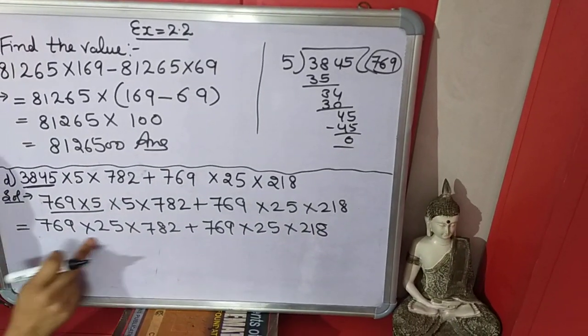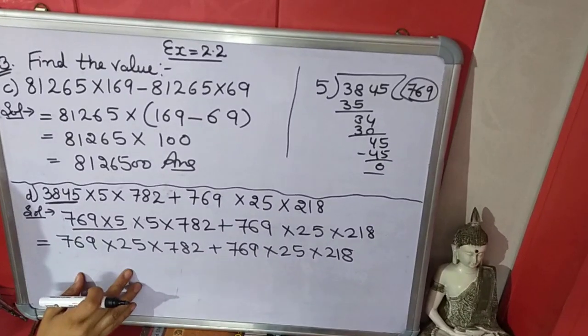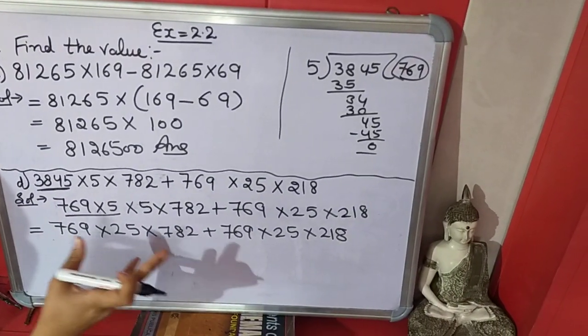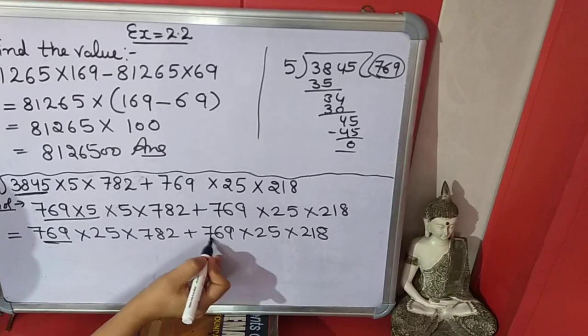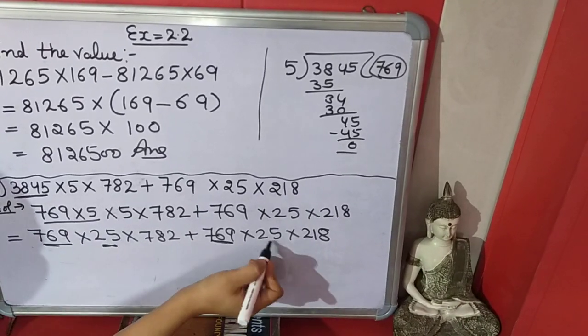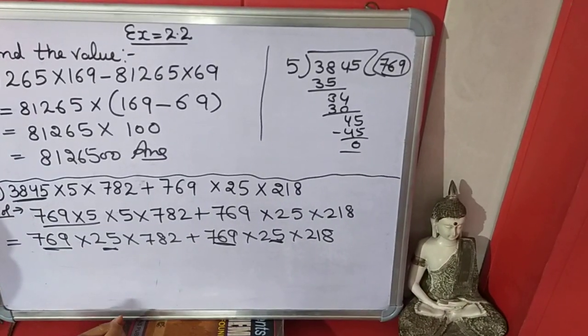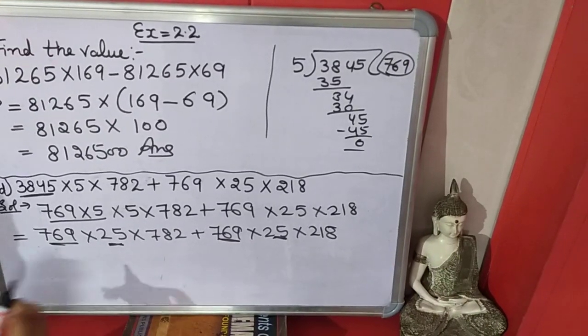Now in this line there are two numbers which are coming outside. Why? Because they are common: 769, 769, 25 and 25. So we will take both numbers outside.